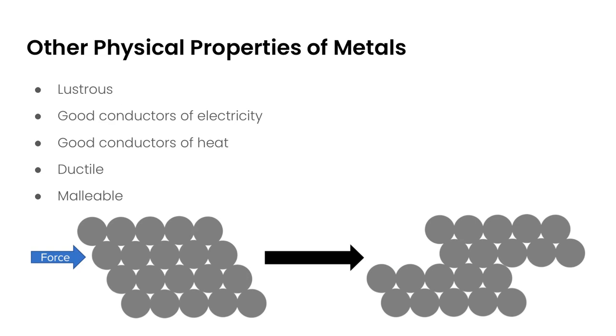Now, there are some other physical properties of metals that are important as well. They're lustrous, which means basically just shiny, especially when they are first cut. They are good conductors of electricity, and that's due to those delocalized electrons that are able to move freely in the solid metal. They are good conductors of heat as well, as well as being ductile and malleable. So ductile meaning able to be drawn into wires, and malleable means hammered into shape.